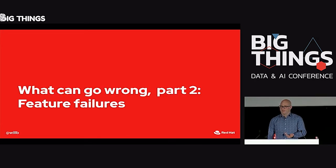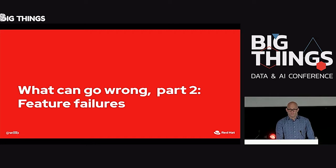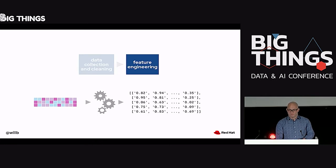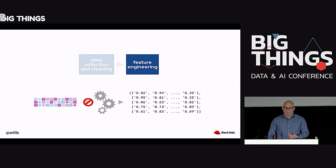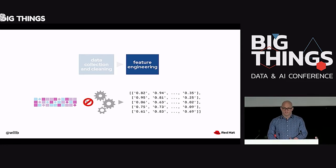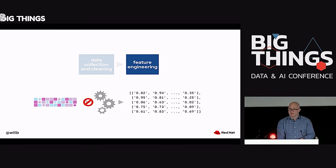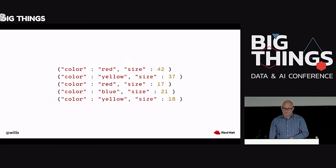Once we get to feature engineering, we're not in the clear. There are a lot of things that can go wrong. The first is related to what we saw with data cleaning: if the format of the records we produce changes, our feature extraction approach may crash because it doesn't expect the values it's getting. But even if you have a sufficiently resilient feature extraction pipeline to handle changes in your data, the techniques you use matter too.